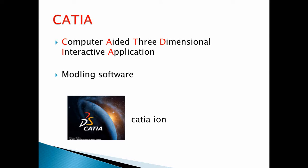For example, there are Mechanical Oriented Software options like Pro-E, SolidWorks, and Civil Engineering Software like Inventor. For Aerospace Industries, we use CATIA. This is the CATIA icon.